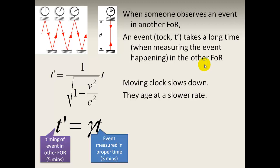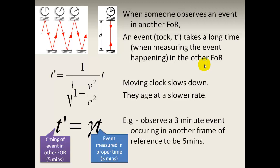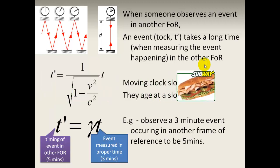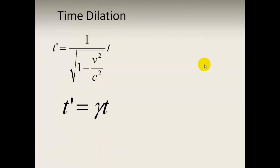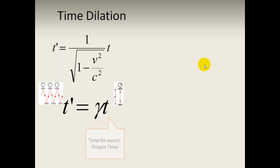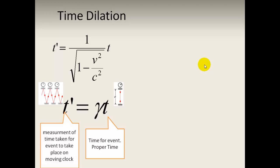Another example: if you observe a 3-minute event occurring in another frame of reference, you measure it as 5 minutes. Remember the sandwich — it takes 3 minutes to make a sandwich, but I'm going to measure this as being 5 minutes. This is the time dilation formula: T prime is as measured in the moving frame of reference, and T is as measured in my frame of reference — this is proper time. The person who sees a moving clock measures a longer duration.